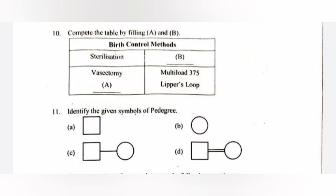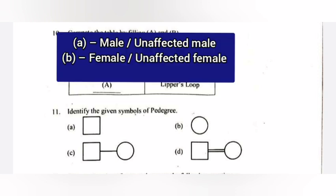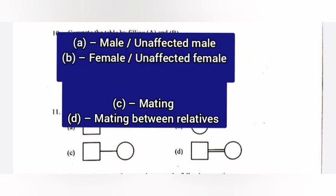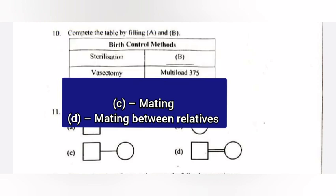Question 12: Identify the given symbols of the pedigree chart. Answer: A — Male or unaffected male. B — Female or unaffected female. C — Mating between relatives.